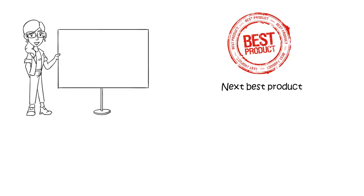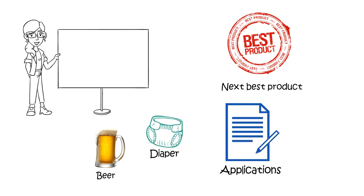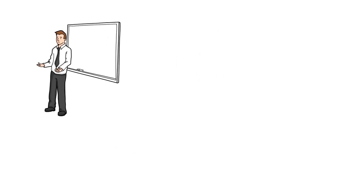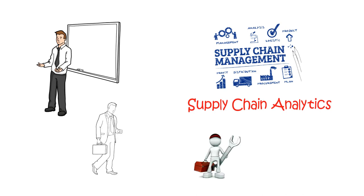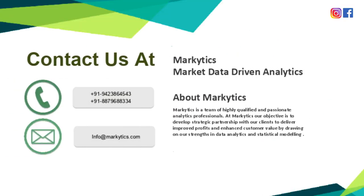Thus we end our session here. In this session we learned how to find the next best product with the example of beer and diaper, and the applications of this analysis. In the next session we will start a new section — supply chain analytics — and loan techniques used by supply chain managers. Thank you.